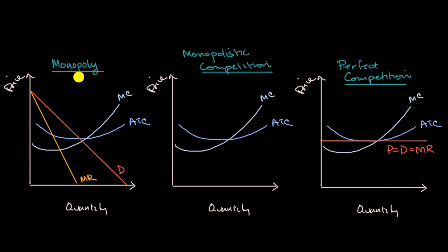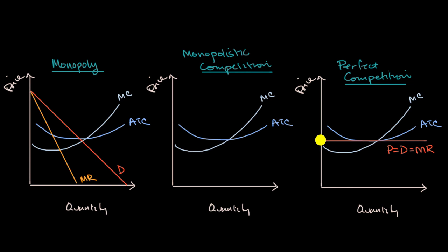But it's very different whether we're talking about a monopoly or perfect competition when it comes to the demand curve. For perfect competition, it is one of many firms with an undifferentiated product and no barriers to entry. So these firms just have to be price takers — whatever the price is in the market, each of those firms just has to take that price, and that price is going to be their demand curve and their marginal revenue curve.